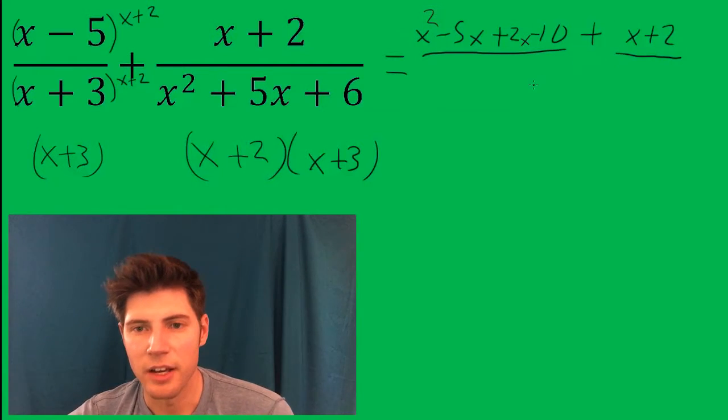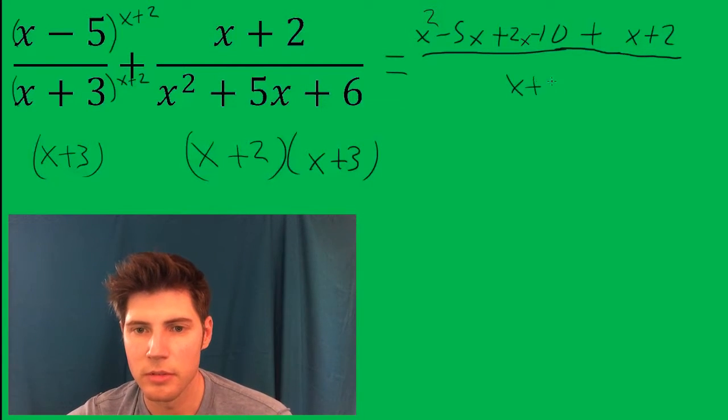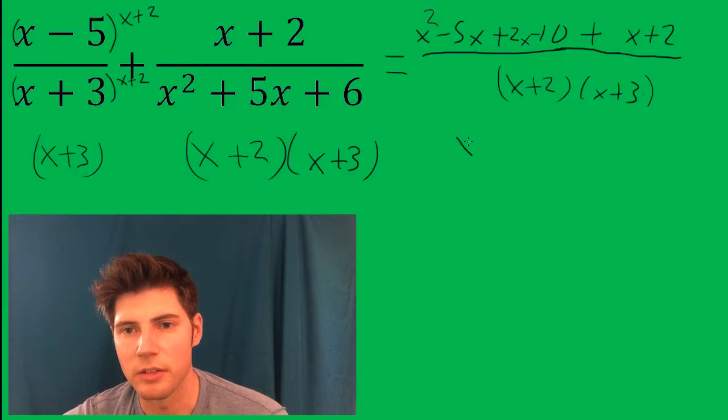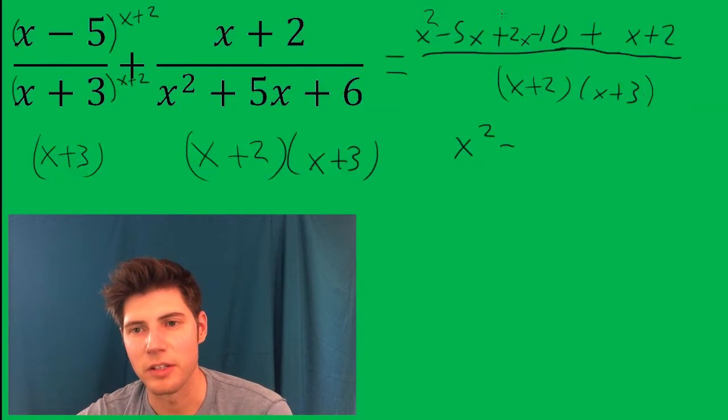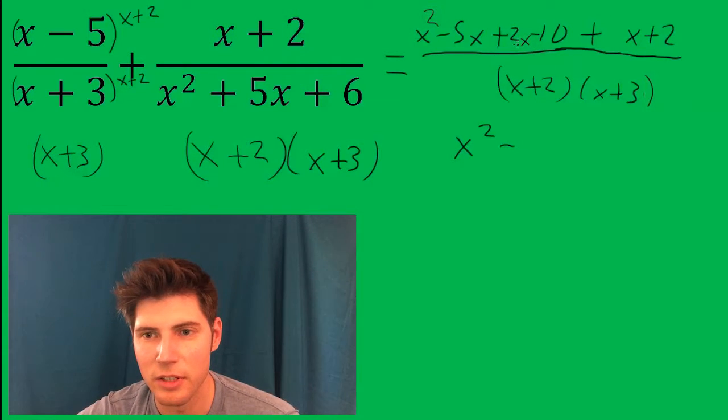Now since they have a common denominator, we can put them under the same fraction. So x² is just brought down. We have -5x, +2x, and +x, which gives us -2x. And the -10 and the +2 is -8.